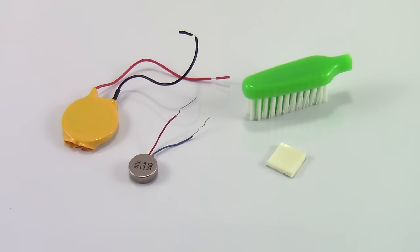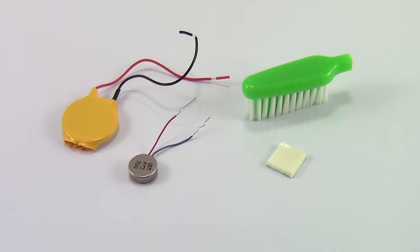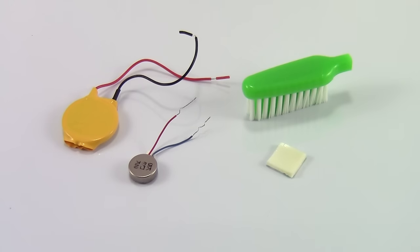To build your bristlebot, you will need a coin cell battery and vibration motor supplied in your Science Buddies bristlebot kit. You will also need a toothbrush and a piece of double-sided foam tape.